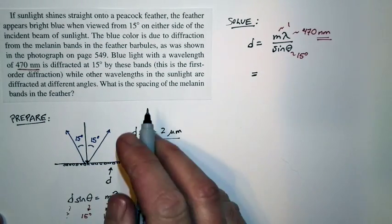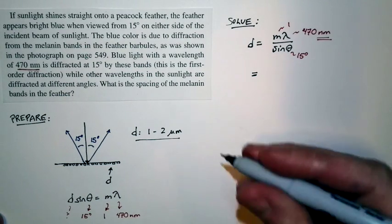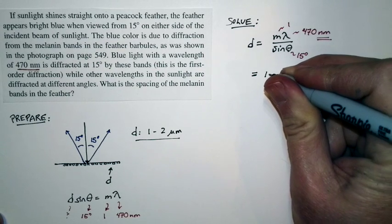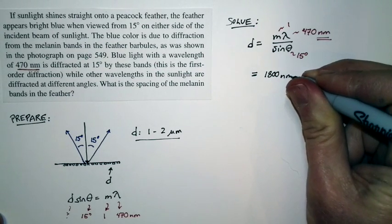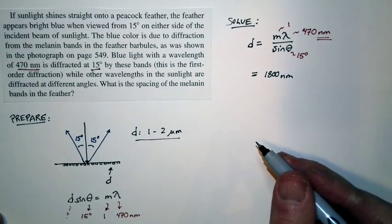that's the spacing of the melanin bands in the feather, what I get is 1800 nanometers. And that's to two significant figures because this is a two significant figure problem.